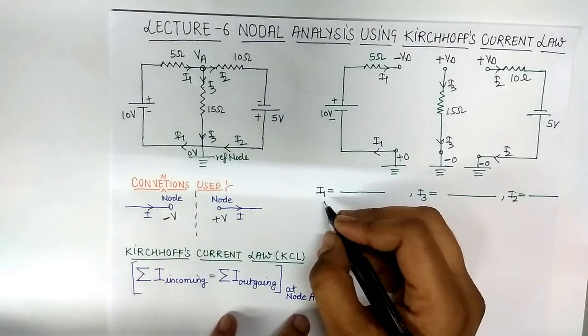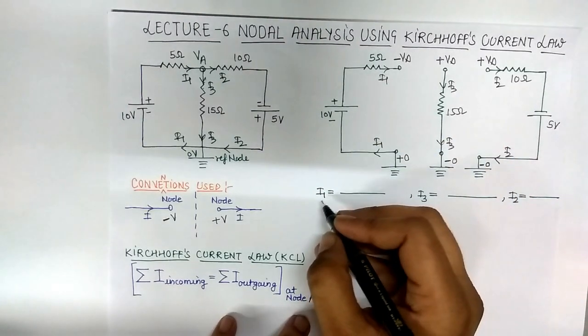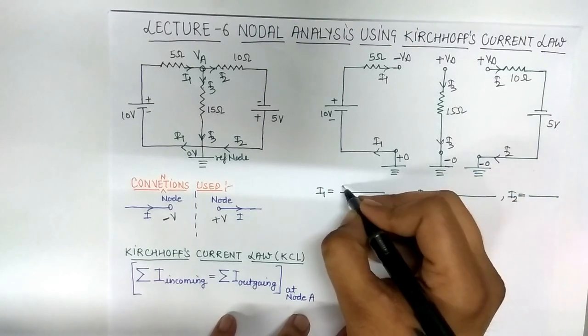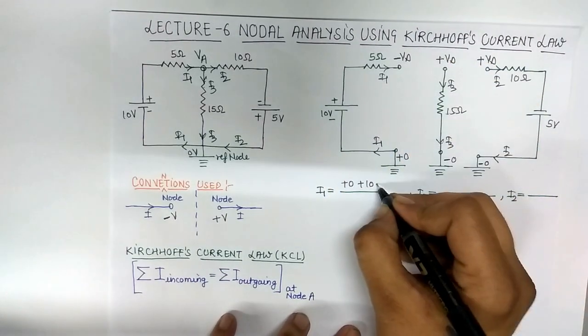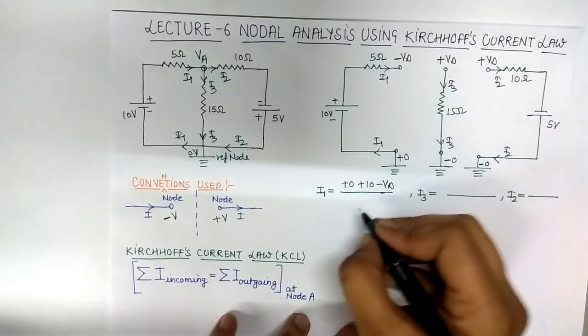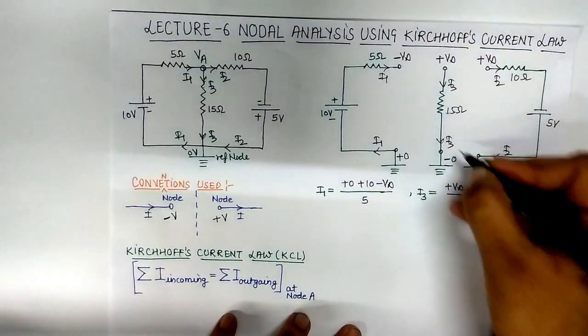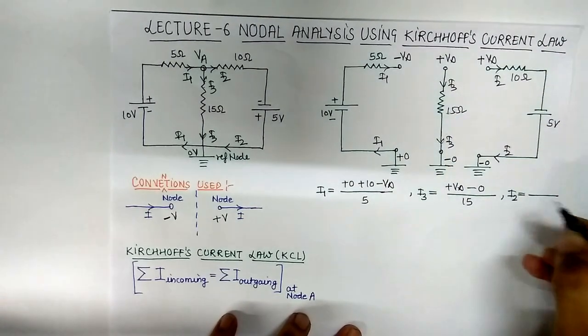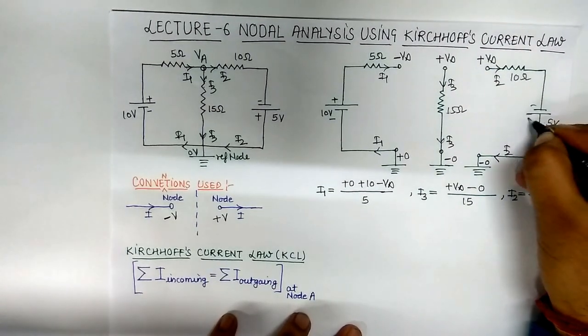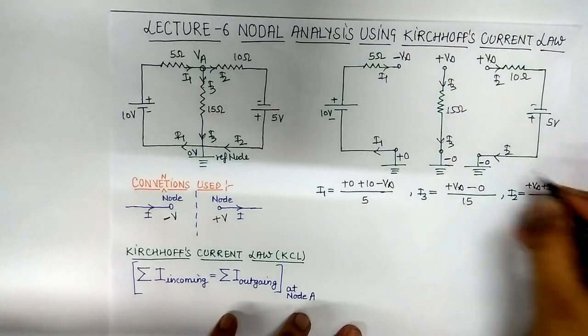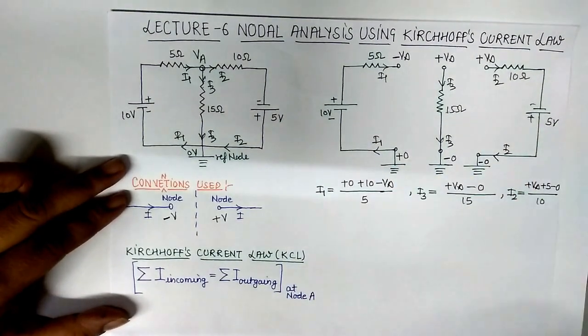Now find out the value of current in particular branches using Ohm's law, I equals V upon R. So we write the equation for I1: start from high potential, plus 0, the last terminal of this battery, plus 10 minus VA upon R, 5. In I3, start from here, higher potential plus VA minus 0 upon R, 15 ohm. Here for I2, it starts from here, plus VA, last plus 5, minus 0 upon R, 10. So here we find I1, I2, I3 in the corresponding branches.